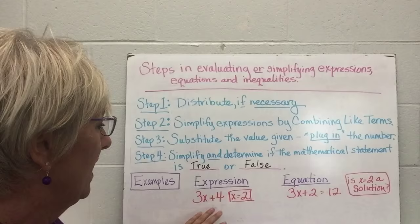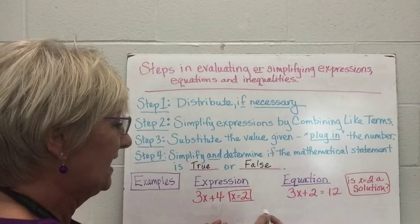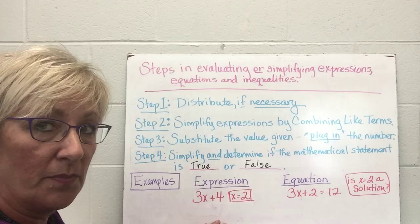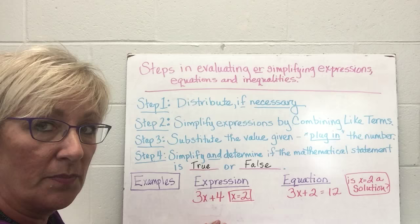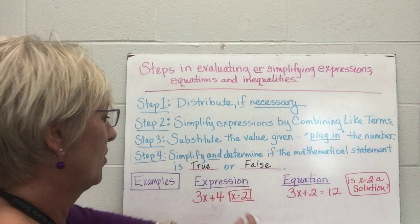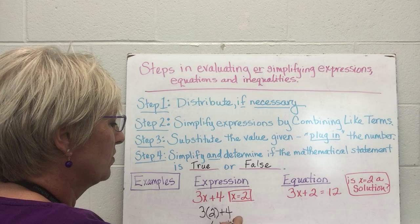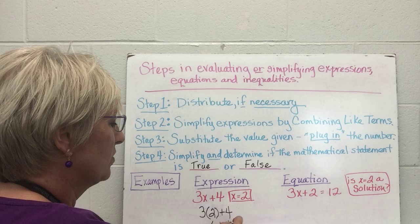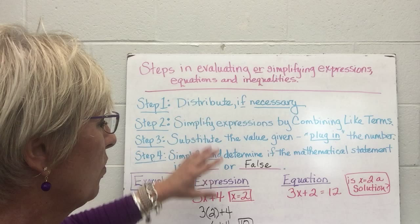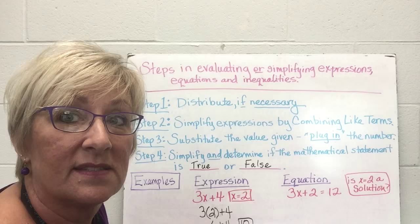Let's look at some examples. This is an expression: 3x plus 4, there's no equal sign, and the value of x equals 2. There's nothing to distribute, nothing to combine — it's in simplest form. So we plug in: 3 times 2 plus 4. I know 3 times 2 is 6, plus 4 equals 10. This expression is equivalent to 10 — that is the evaluated result when x equals 2.